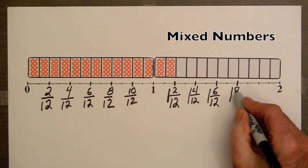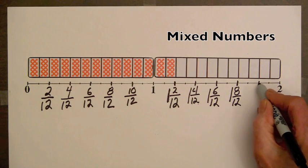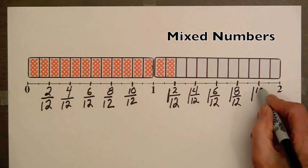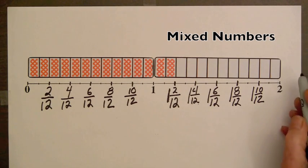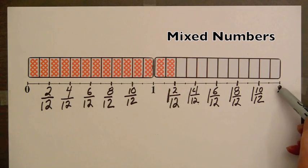1 and 8 twelfths. 1 and 10 twelfths. And eventually, we're going to have two whole bars. And because of that, we write the number 2 rather than 1 and 12 over 12.